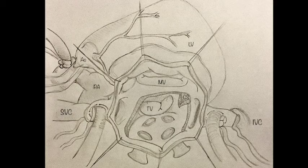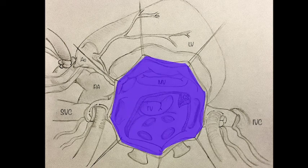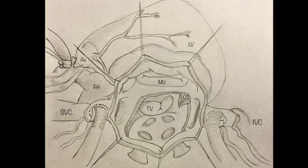Once VSD closure is accomplished, the atrial switch is the following step. In step 1, the atrial septum is completely excised, creating a new common atrium. This step includes the resection of the ovalis fossa with special care to avoid any injury to the conduction system.